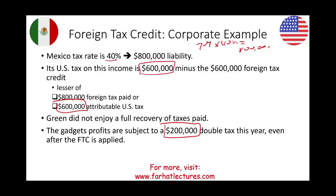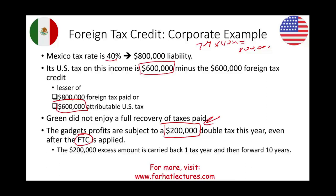Even when we apply the foreign tax credit, they'll only give us $600,000 — but did we lose that $200,000 forever? Not at all. What you can do is carry it back one year by amending your taxes, and then carry it forward 10 years. So you can apply this $200,000 unused tax credit to offset future years' tax liability.